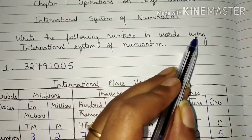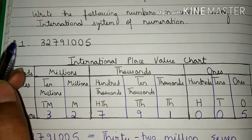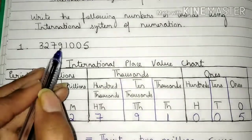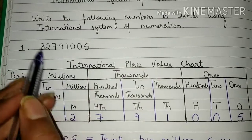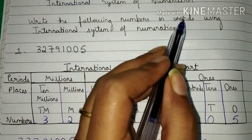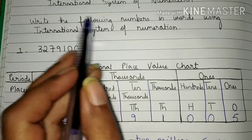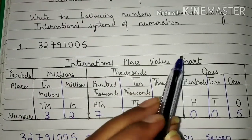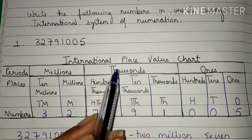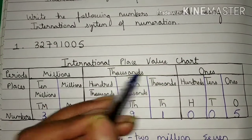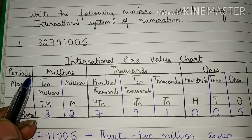The first number is 32,791,005. You have to write this number in words using the international system of numeration. First of all, you will draw an international place value chart like this.